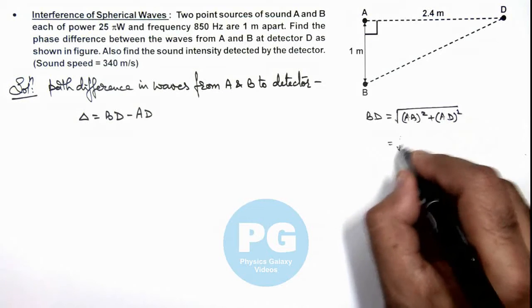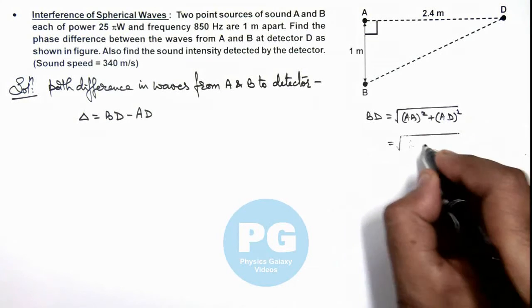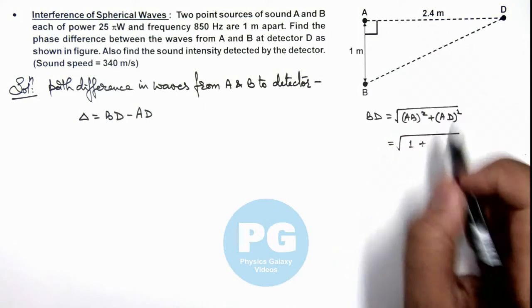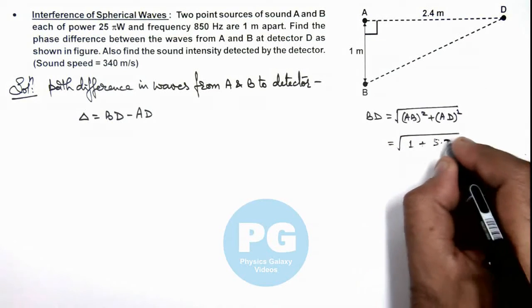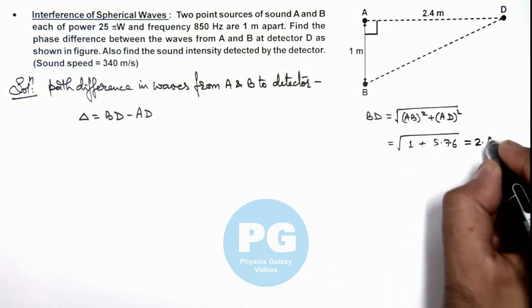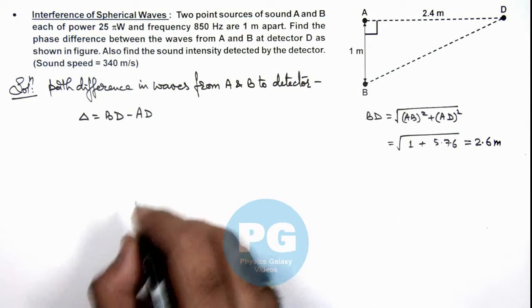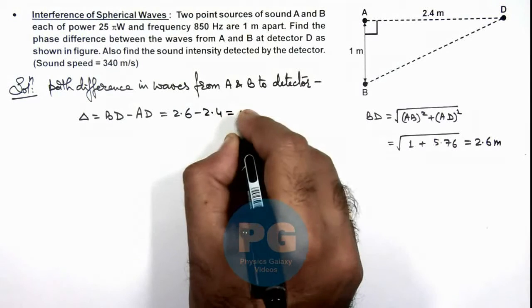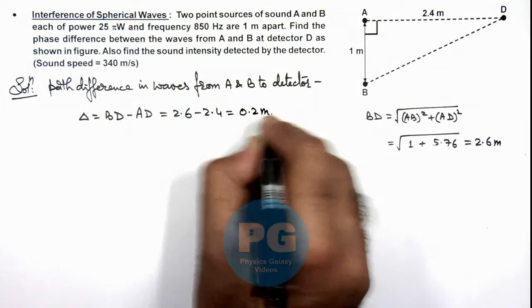This will be root of AB squared is 1 plus, when we calculate 2.4 squared, this is 5.76. Numerically when you calculate this, it comes out to be 2.6 meters. So if we substitute 2.6 minus 2.4, that is equal to 0.2 meters. That is the path difference.